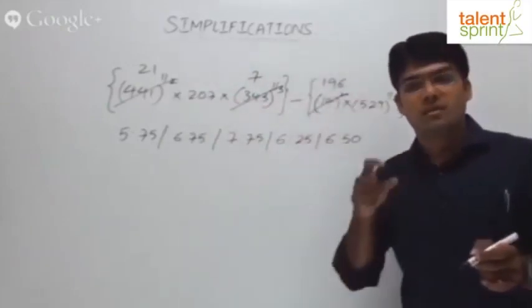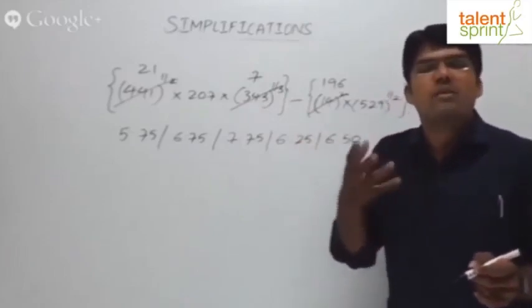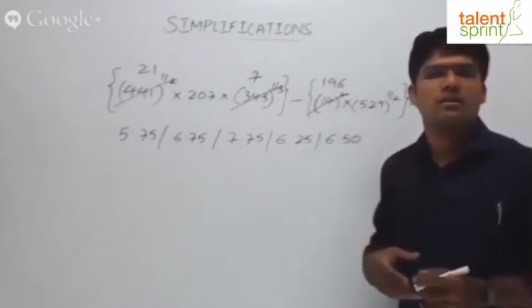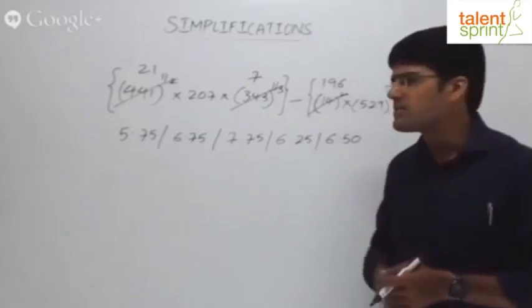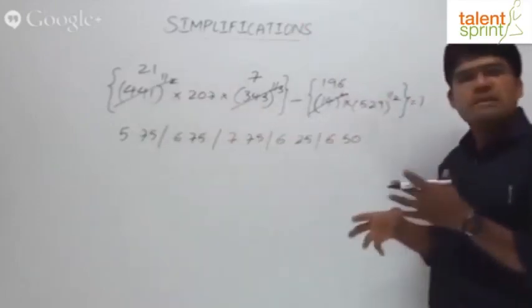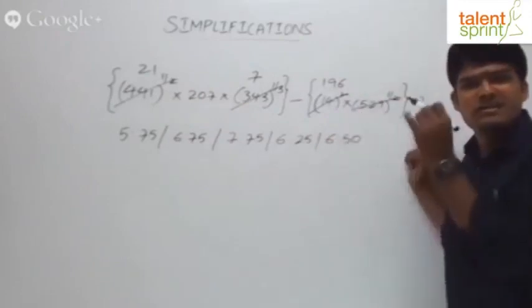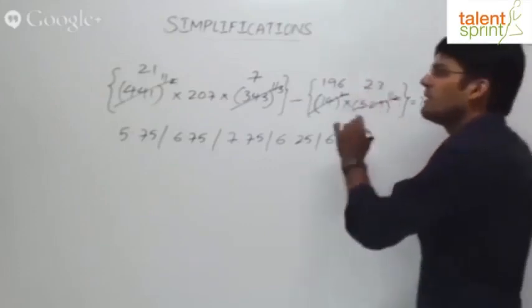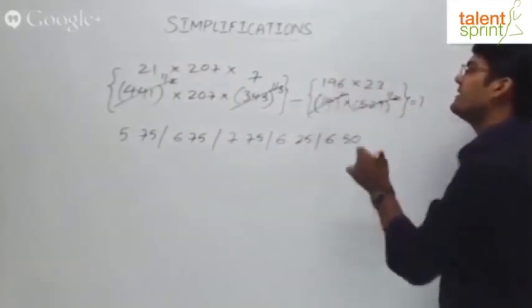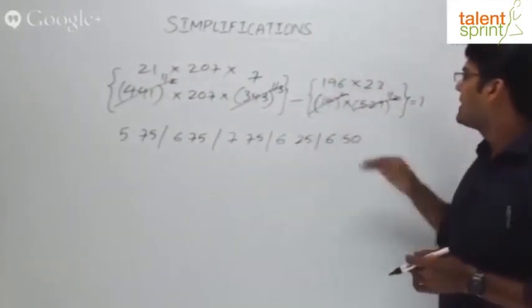This is what stands for O in BODMAS. The other operations of exponents, powers, indices. Square root, cube root, square - all this comes under O. 529 square root is 23. 23 squared is 529. So 21 into 207 into 7 divided by 196 into 23.